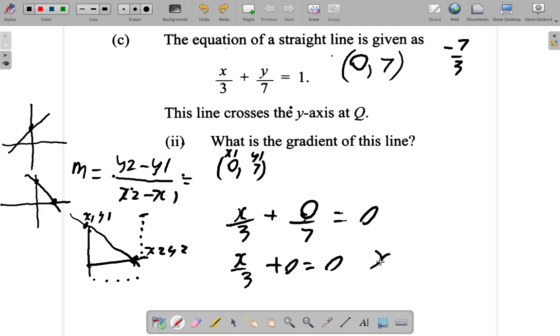Now this becomes x over 3 equals 1. So here, when you have y being 0, where does it cut the x-axis? x over 3 plus 0 equals 1. It's my mistake, I had put 0 out here. It should be 1. x over 3 plus 0 over 7 equals 1. x over 3 plus 0, because 0 over 7 is 0, is equal to 1.